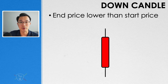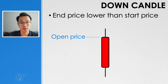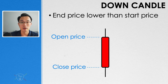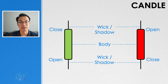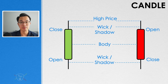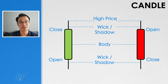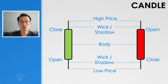Down candles represent the market session where the prices ended lower than where they started. This represents the price at the start of the day, and this represents the price at the end of the day. For a down candle, the price ended lower compared to where it started. The section between the opening and the closing price is known as the body of the candle. These skinny lines at the top and bottom are known as the wicks or the shadows. The highest part of the candle — normally the top of the upper wick — is the highest price reached during that market session. And the lowest part, at the bottom of the lower wick, is the lowest price during that session.